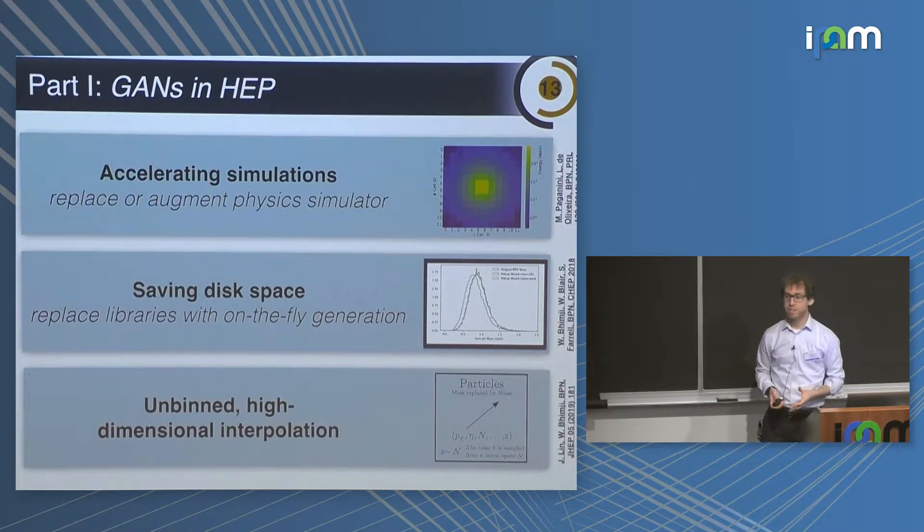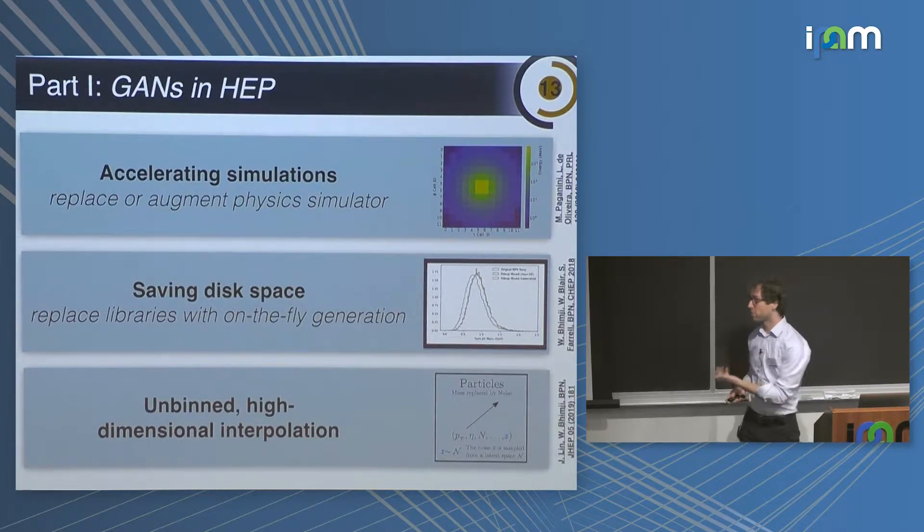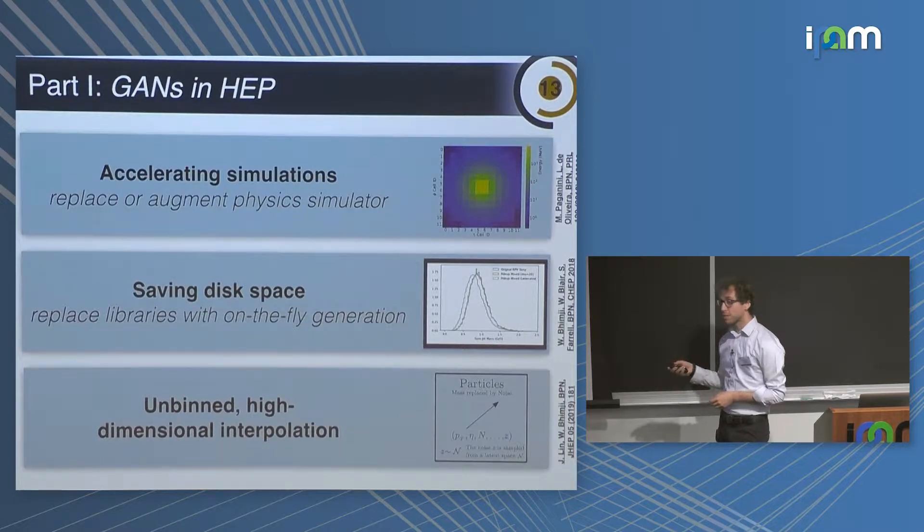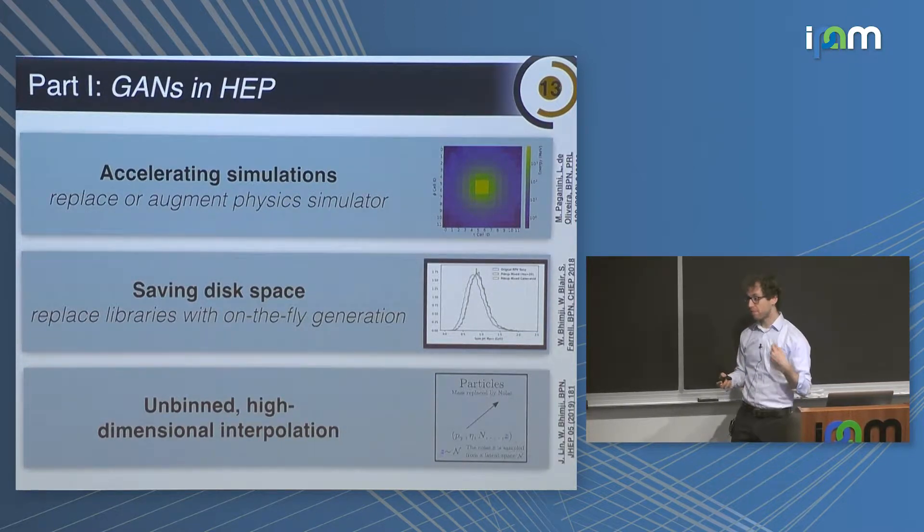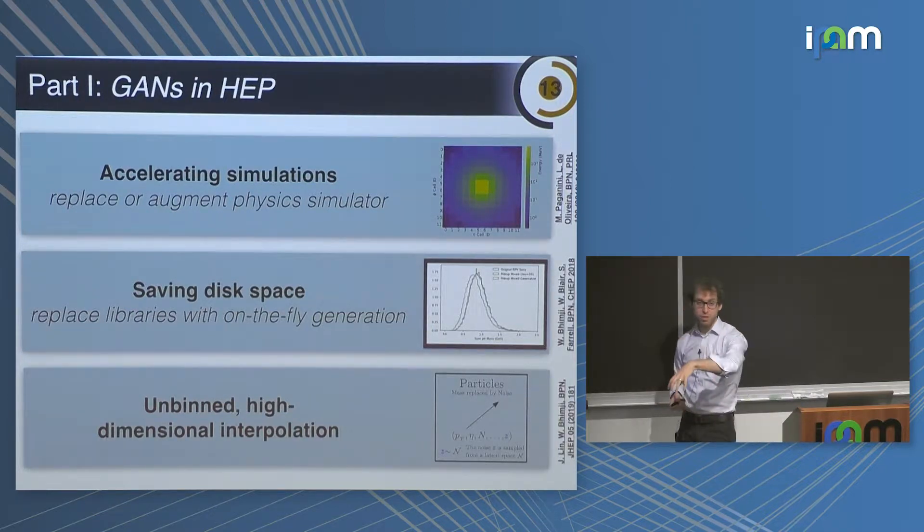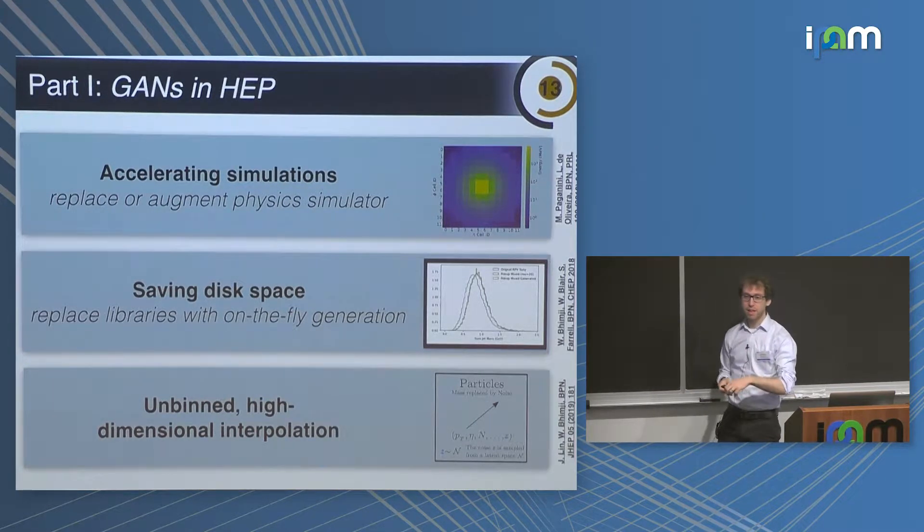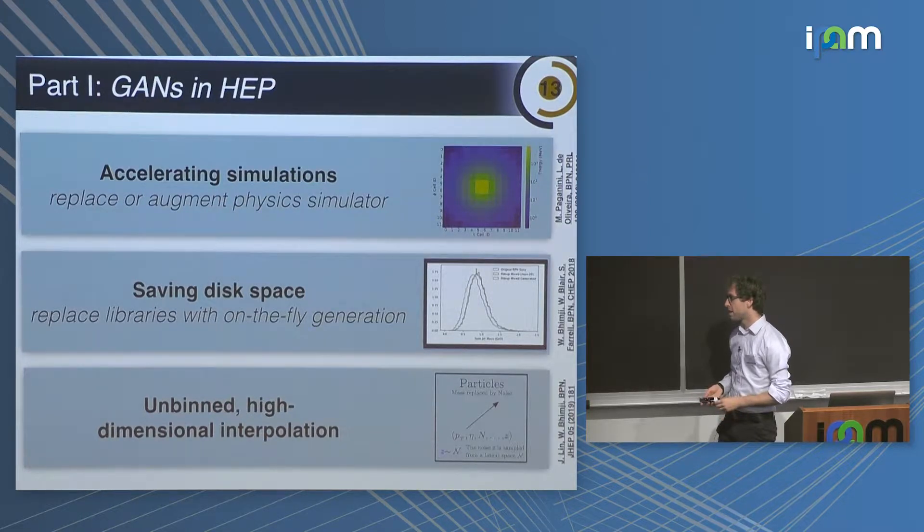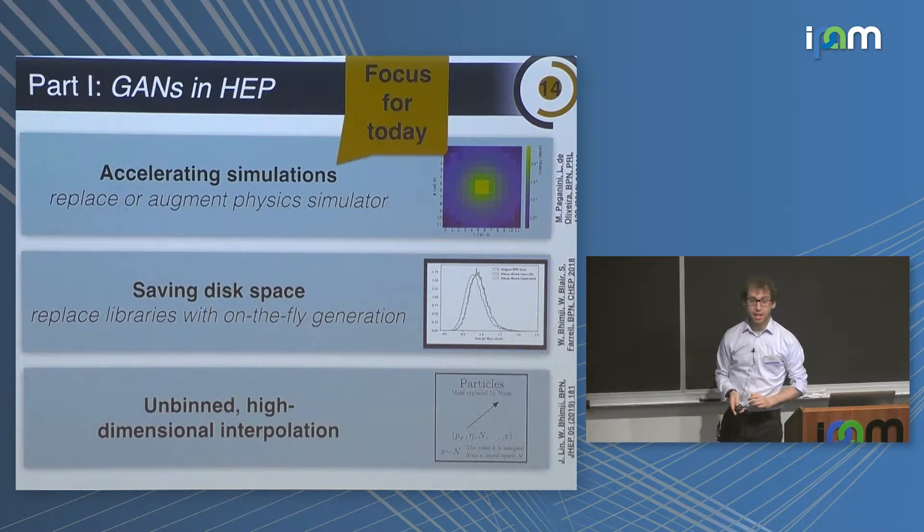There are multiple ways that GANs have been studied in high-energy physics, and I'm only going to talk about one of them today, which is to accelerate simulations. One may also be able to use GANs to save disk space. So if you have a very cheap to produce but heavy to keep on disk library that you need to sample from, then it may be better to just store the weights of a neural network that you can sample from on the fly. Today, I'm going to focus on accelerating simulations.